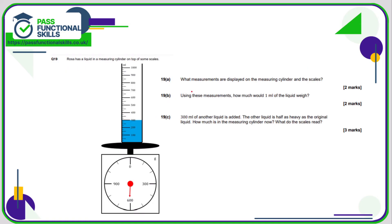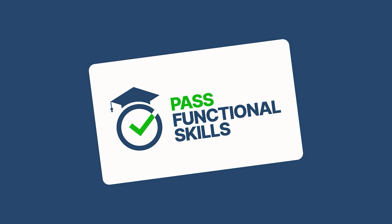Question number 19. What measurements are displayed on the measuring cylinder and scales? Well, on the measuring cylinder, that is 300 milliliters, and on the scales, that is 600 grams. So for B, if 300 milliliters weighs 600 grams, then one milliliter is 300 times less than 300. We need to divide 600 by 300, so one milliliter is going to weigh 2 grams. 300 milliliters of another liquid is added. The other liquid is half as heavy as the original liquid. So how much is in the measuring cylinder? Well, if we add another 300 to 300, we'll have 600. And if it's half as heavy, then it means it's going to weigh 300, not 600. And 600 plus the 300 means the scales will now read 900 grams.